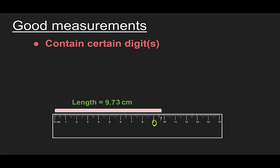In addition, there's one more digit that's added, and that would be this 3. That digit is called an estimated digit, and a good measurement should always contain one digit that was estimated.